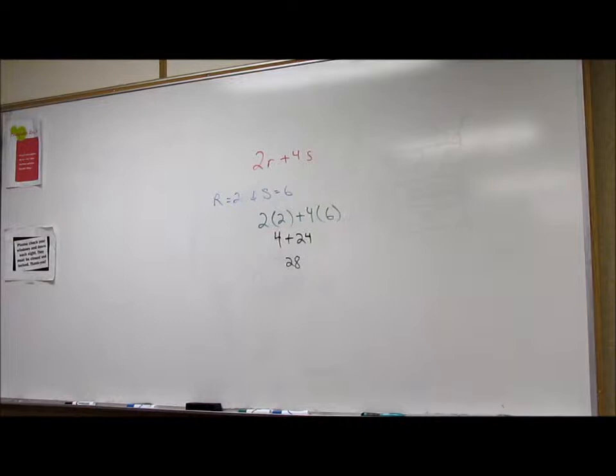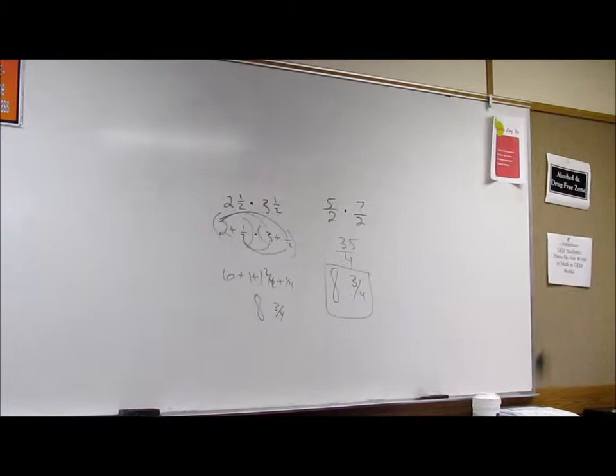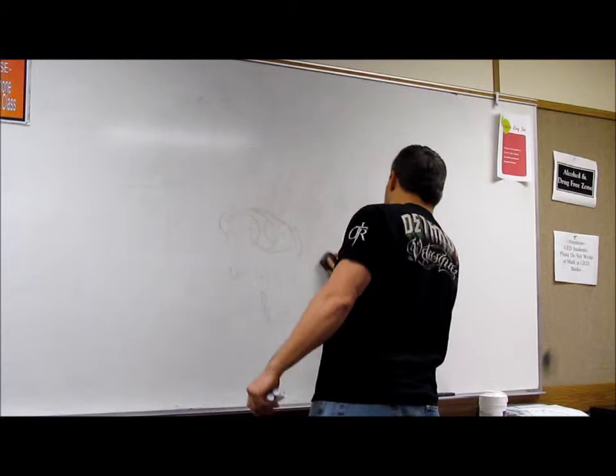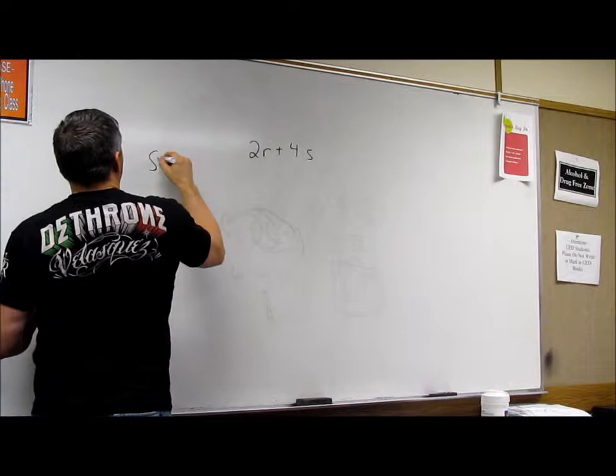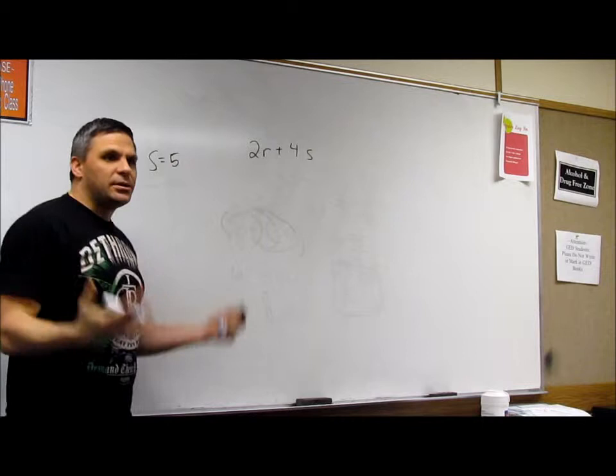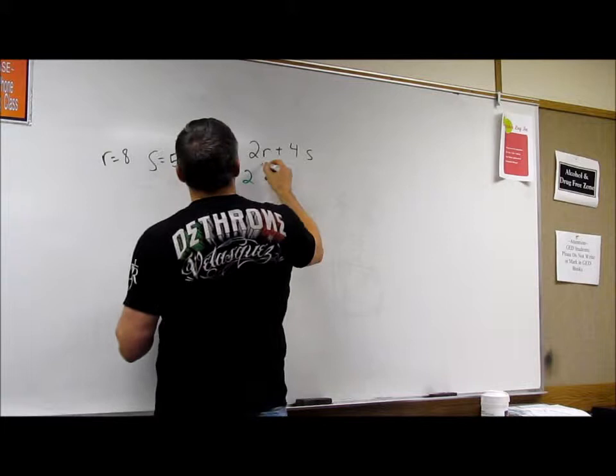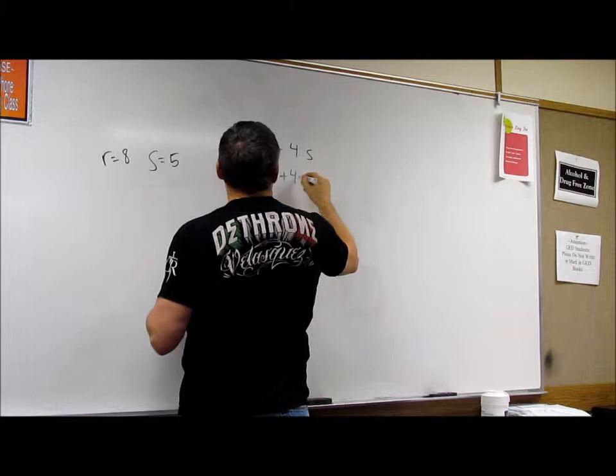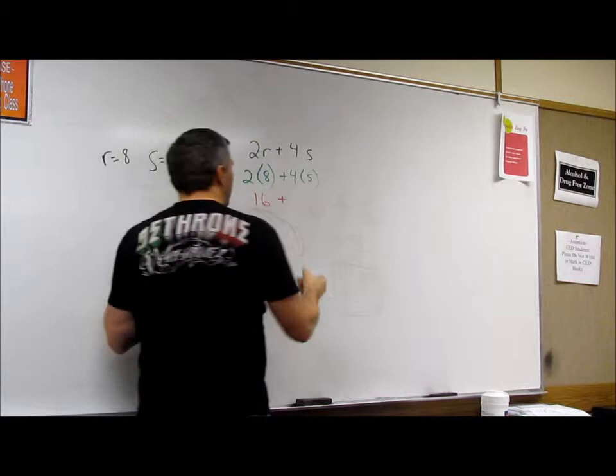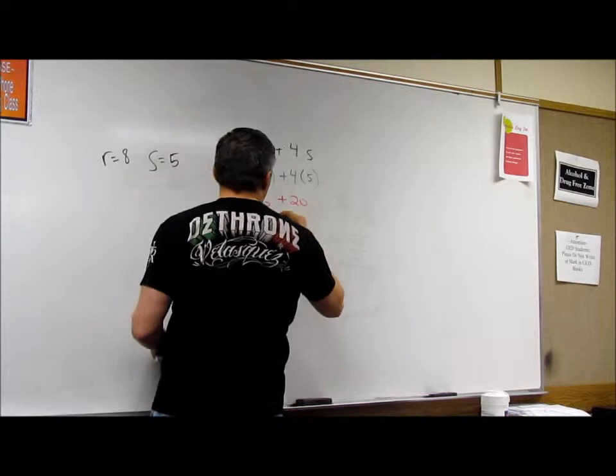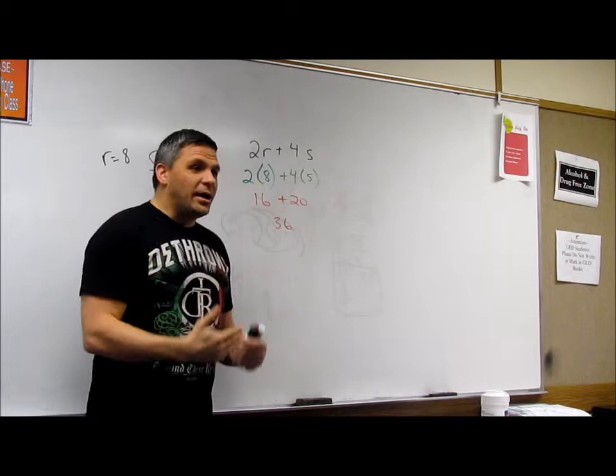Okay. And then they have you do it again with different numbers. So then they say do it with 2R plus 4S with something like R is equal to 8 and S is equal to 5. And then you just, again, plug it in. So 2 times 8 plus 4 times 5. And you do the math. And then 2 times 8 is 16. Plus 4 times 5, which is 20. And 16 plus 20 is 36.